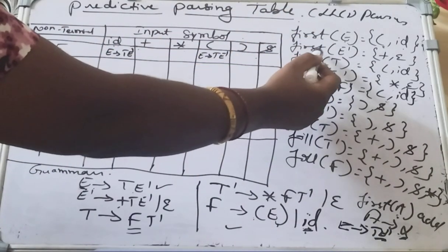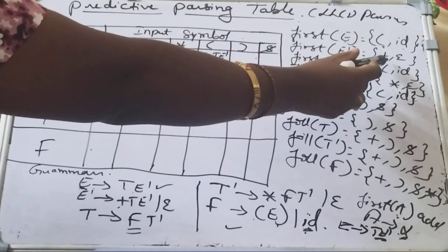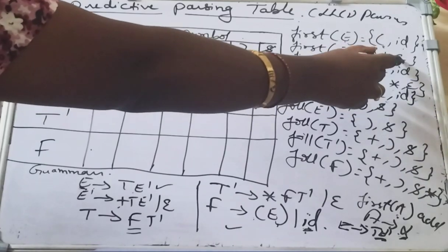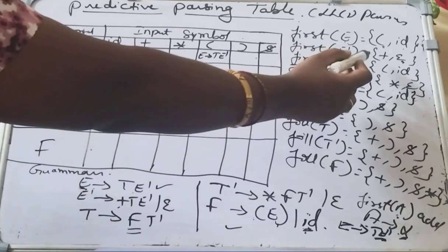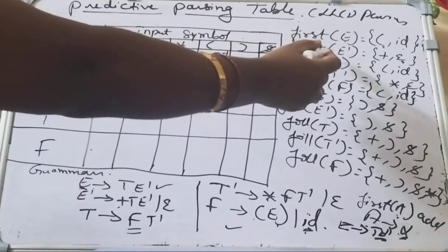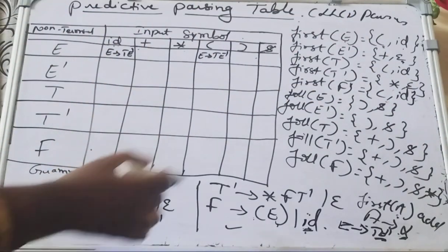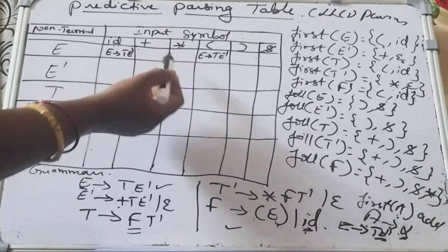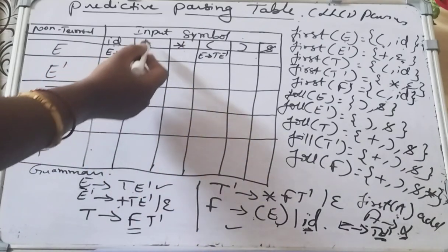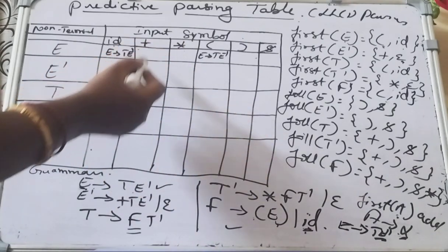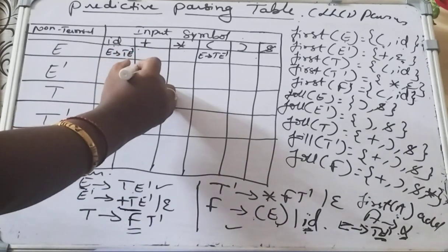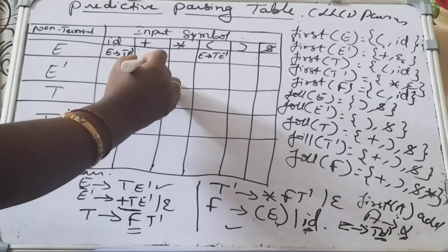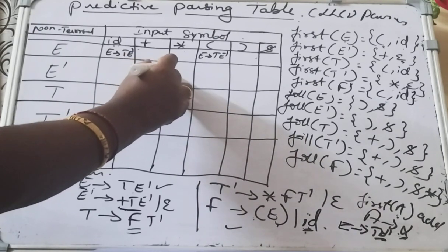Similarly, for E': FIRST(E') = {plus, epsilon}. We will handle epsilon later. For the terminal plus in FIRST(E'), add the production E' derives plus T E' in the E' row under the plus column.